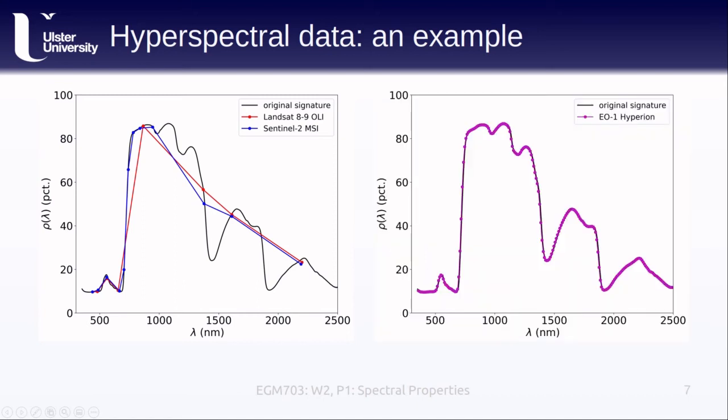If, on the other hand, we take a look at what a hyperspectral sensor sees, we see the difference and we also see why hyperspectral sensors are called imaging spectrometers. Because they record in many narrow, continuous bands, they are able to faithfully capture the spectral signature of these surfaces.